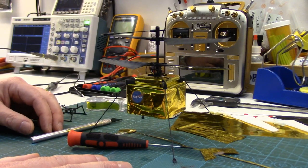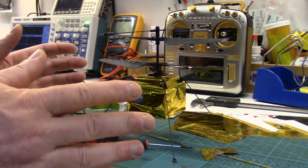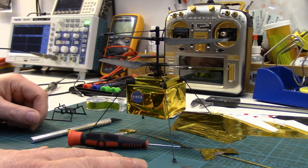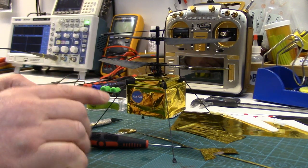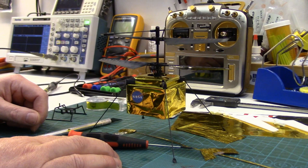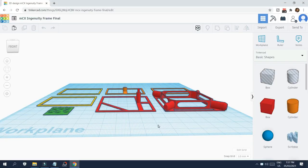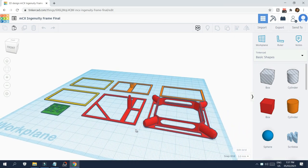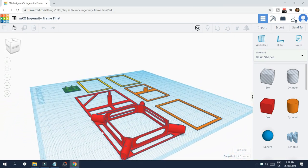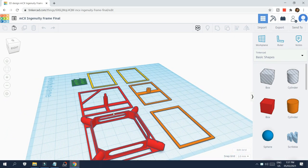Howdy folks, John here from rchelicopterfun.com. I'm just finishing up the final touches on my little RC Ingenuity coaxial heli which I've built using the guts out of an old Blade MCX along with a little time on Tinkercad to 3D print the lightweight frame assembly that's inside.